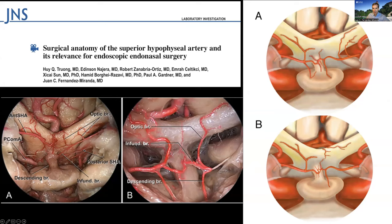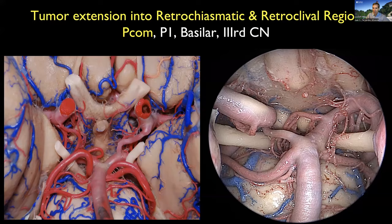The most common configuration is a trifurcation, although sometimes the descending branch is absent. There are also secondary or posterior superior hypophysial arteries — other branches coming directly from the carotid artery more posteriorly after the main superior hypophysial artery. All those perforating branches from the carotid artery need to be identified and preserved to the best of our abilities during these craniopharyngioma resections.